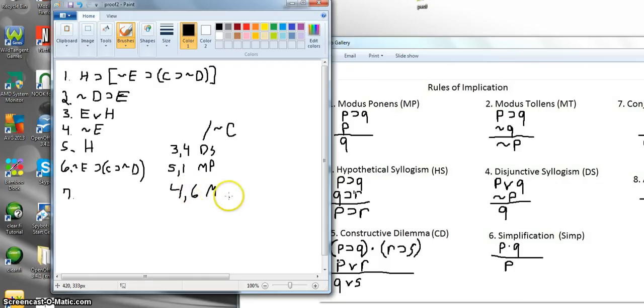It's getting really messy, and 6, simple modus ponens, or you could put 6 and 4, I don't care, and you get if C, I believe this is correct, let me make sure I got this, if C then not D.